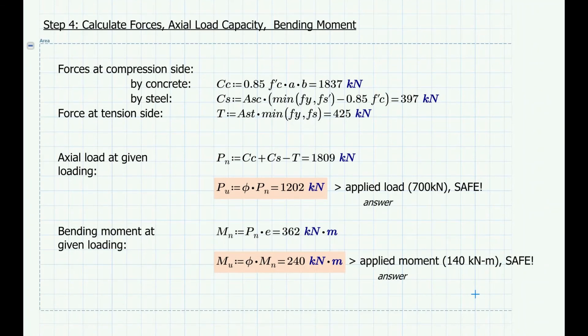So the ultimate axial load capacity is 1202 kN, which is greater than the 700 kN applied load. The ultimate bending moment is 240 kN-m, which is greater than 140 kN-m applied moment. So the column is safe to carry the applied load and the applied moment.